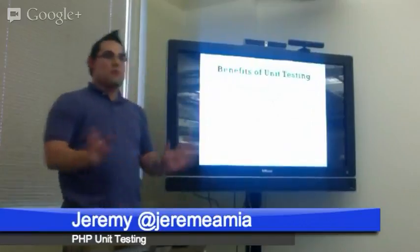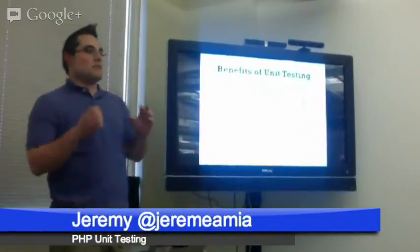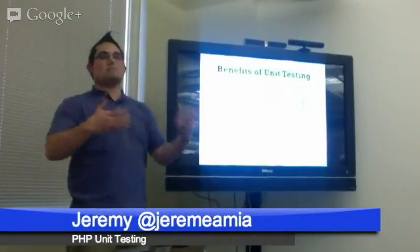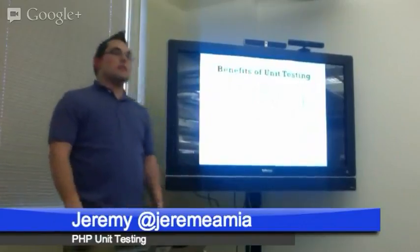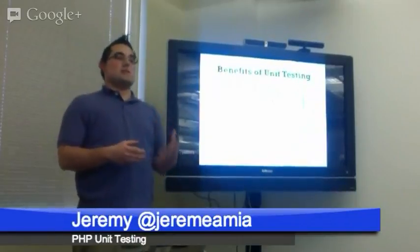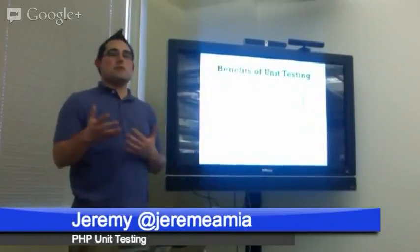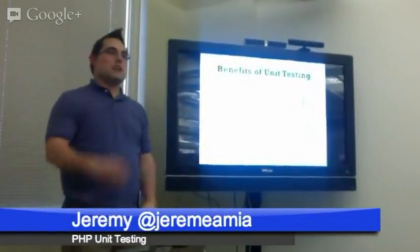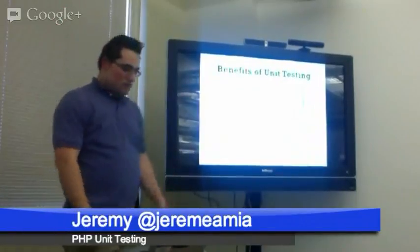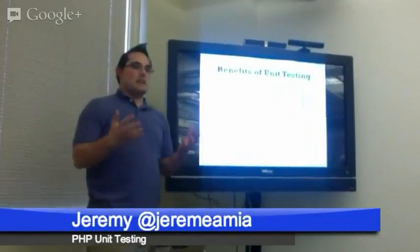I'd sum the two major benefits of unit testing with these two words: confidence and automation. You can have more confidence in your code when you've unit tested it and exercised all the code you've written. Automation is the other key part — there are lots of tools that can run your tests automatically, at the click of a button or even with continuous integration. When you make a commit to your version control system, an automated system can pick up and run your tests automatically. It all comes down to having confidence in the code you're producing.